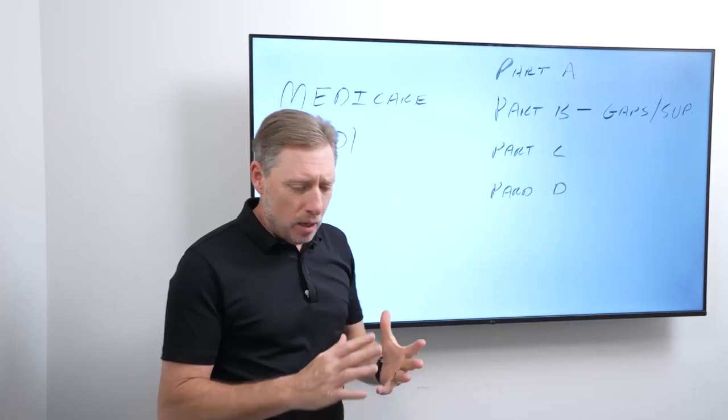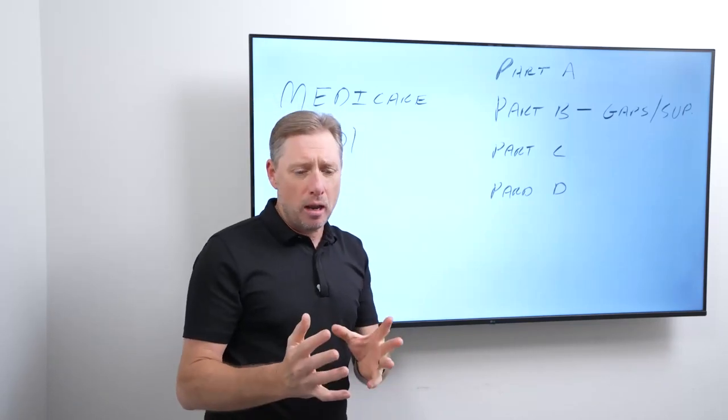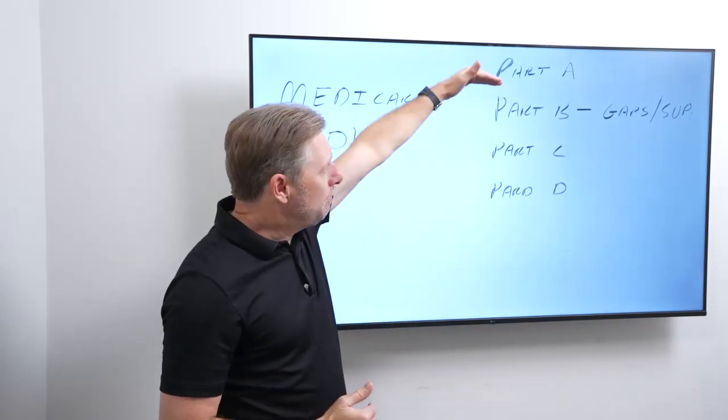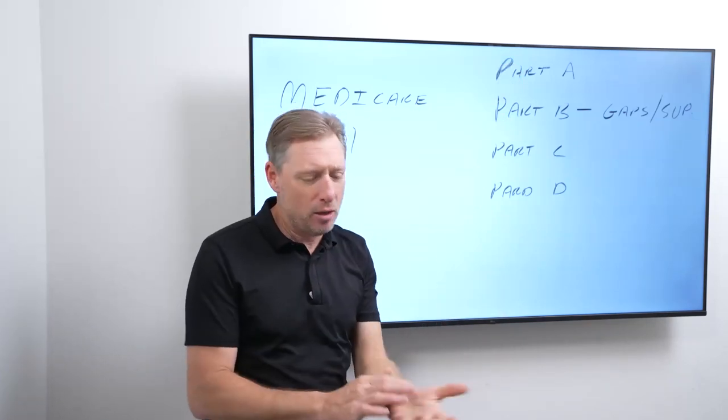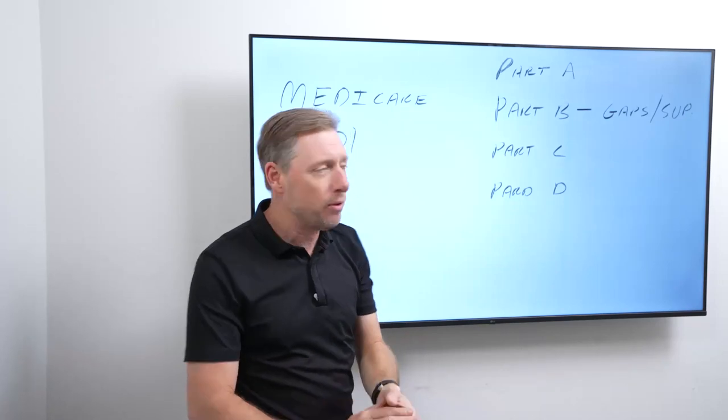The next thing is Part B. Part B is where you incur some costs because, again, Part A is in hospital. Part B, the way to think about it is at a hospital. So there are things like doctor visits and that sort of thing.